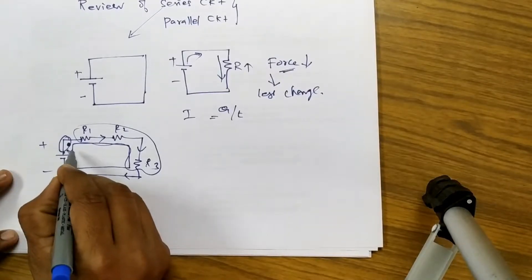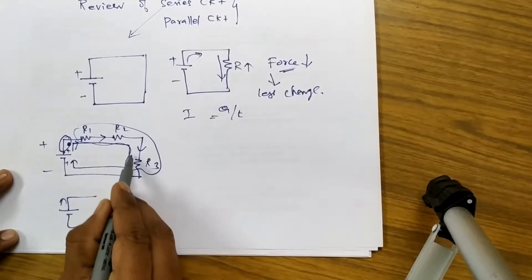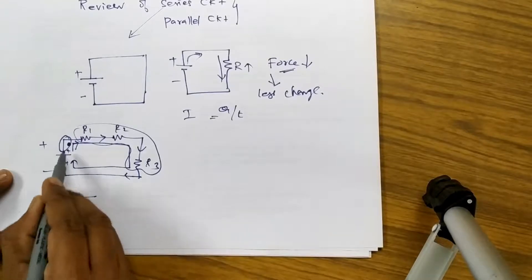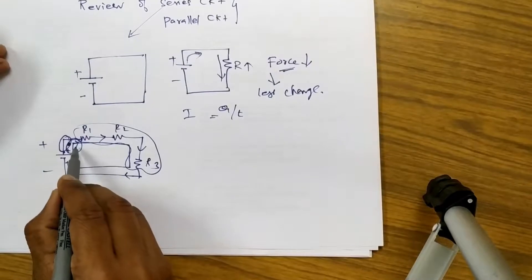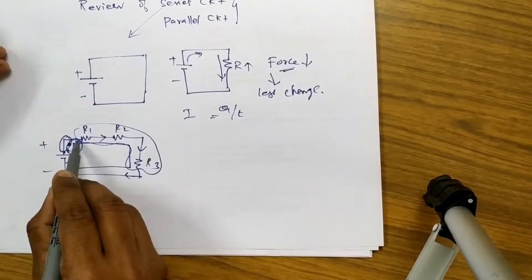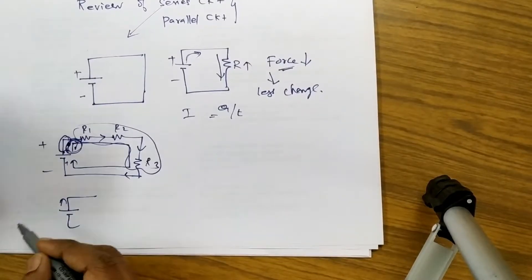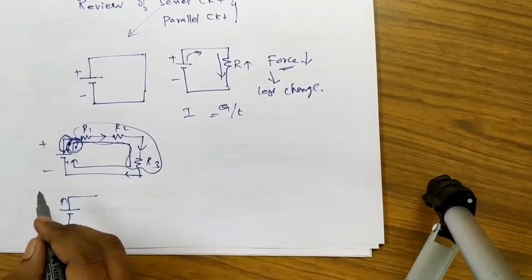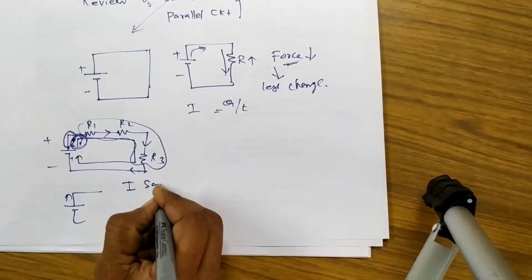That is the reason we say that the current is the same in the series circuit, because the current value starts from the battery and if there is any reduction or increment in the current value before the resistance, it all happens at the beginning at the battery itself, not somewhere else in the circuit. So we will have the same current throughout.